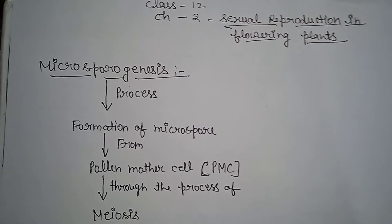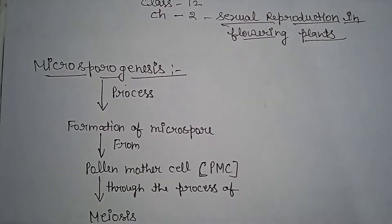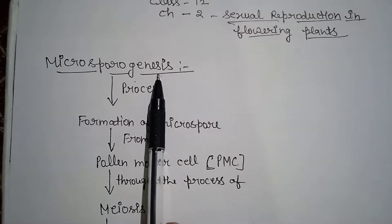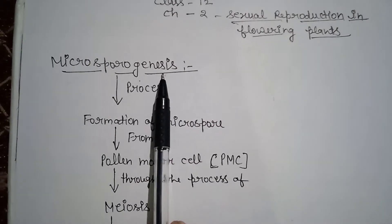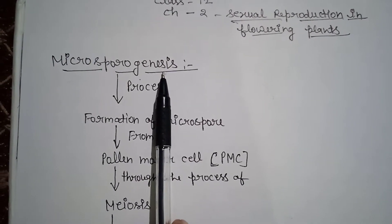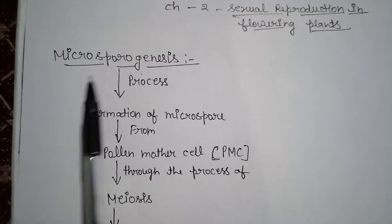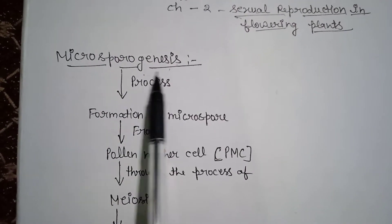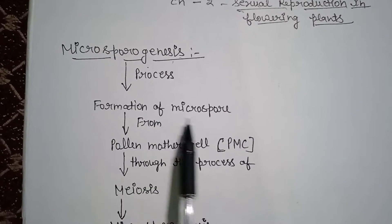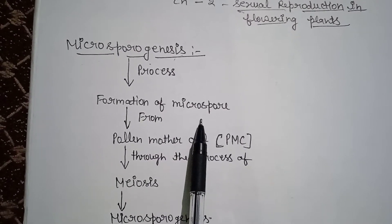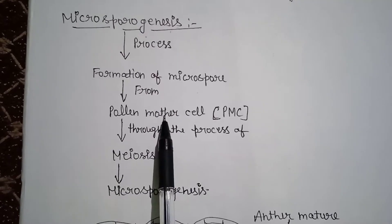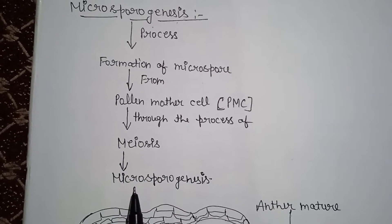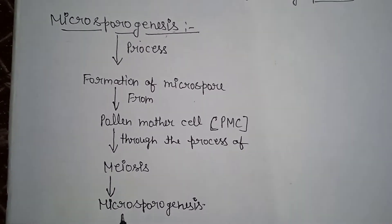Good morning students, welcome to my channel. Today we are going to start our new topic: microsporogenesis. I have told you in the previous lecture about the structure of microsporangium, so today we will start microsporogenesis. Microsporogenesis is a process of formation of microspore from pollen mother cell or PMC through the process of meiosis.